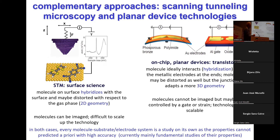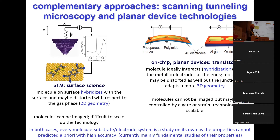One very important point: every molecule-substrate-electrode system can be a study on its own. If you put a molecule on a surface, it can take a year to understand what's going on. At the moment, we cannot predict with high accuracy the properties of these molecules when they interact with the surface and electrodes. And that means the status of the field is mainly still in the fundamental studies — we still need to better understand the properties of these different molecules.